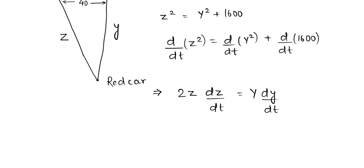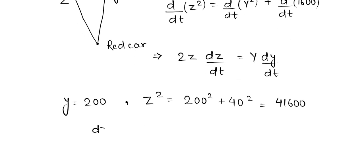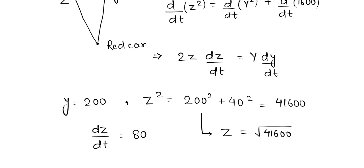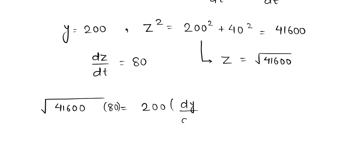Here we have the information that y equals 200, and z squared equals 200 squared plus 40 squared, which comes out to be 41600. We also know that dz/dt equals 80 feet per second, and z equals the square root of 41600. Plugging all those values into the equation, we get: square root of 41600 multiplied by 80 equals 200 times dy/dt.